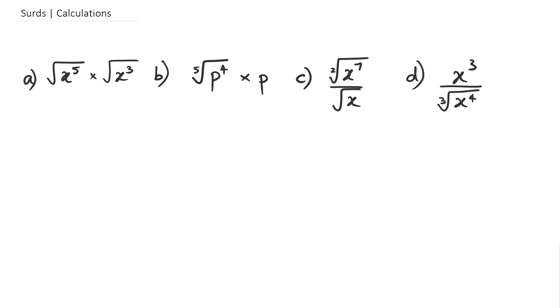First thing is that we've got square root of x to the power of 5, which can be written as x to the power of 5 over 2, multiplied by square root of x³, which is x to the power of 3 over 2. Now because the bases are the same, we add the powers, so we're going to get x to the power of 5 over 2 plus 3 over 2, which equals x to the power of 8 over 2, and then this can be simplified as x to the power of 4. So that's A.